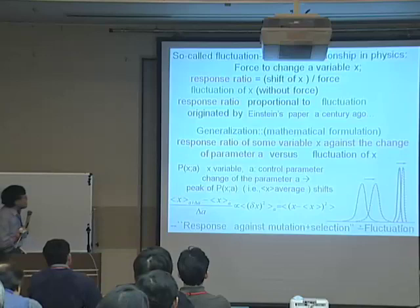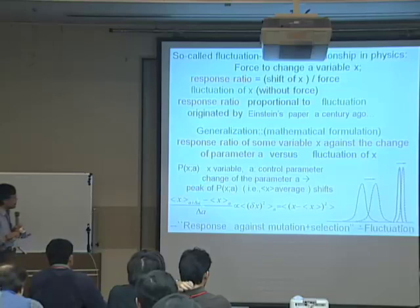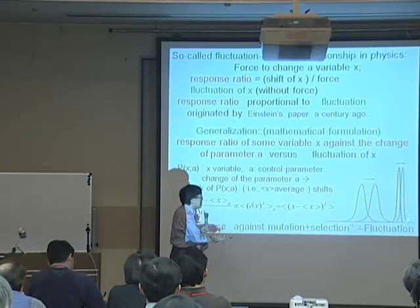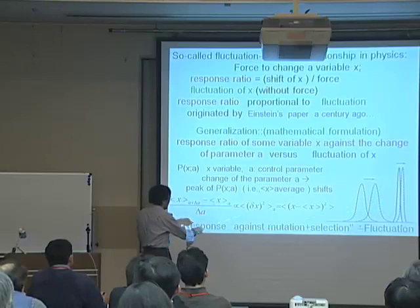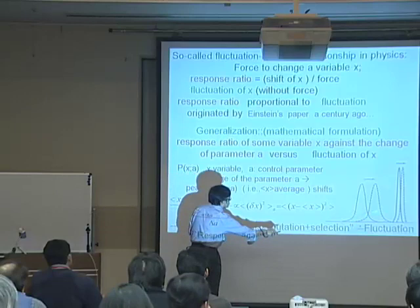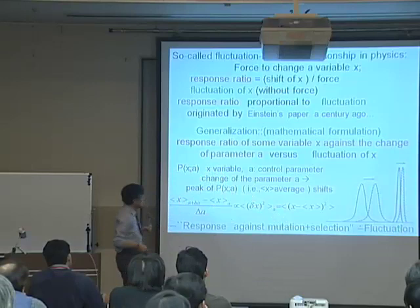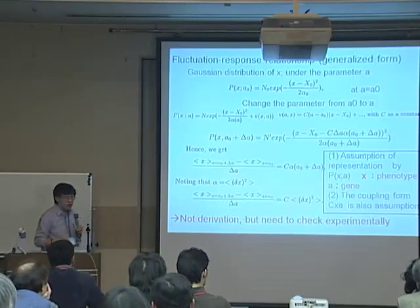We can generalize this type of argument by considering the distribution P(X), where X is some variable and A is a control parameter. By changing the control parameter, this distribution changes. Assuming a Gaussian-type distribution, if the variance is larger, then by changing A, the change in X is larger — the response of the change of X divided by delta A is proportional to the variance. Starting from a Gaussian distribution-like form, we can derive this relationship, though it is an approximate theorem. We need to assume the system is represented by a distribution P(X) parameterized by parameter A.